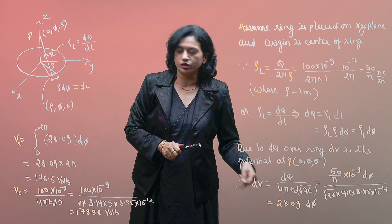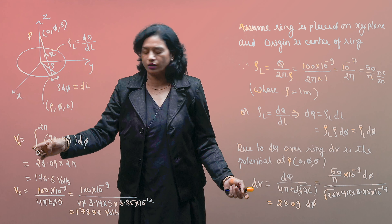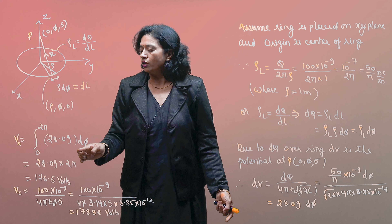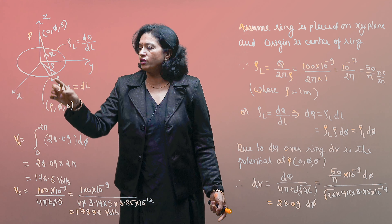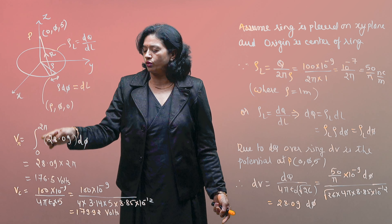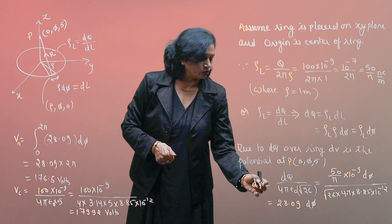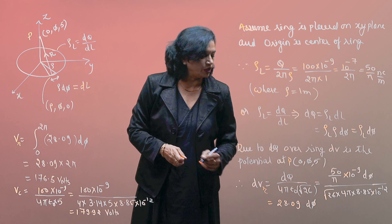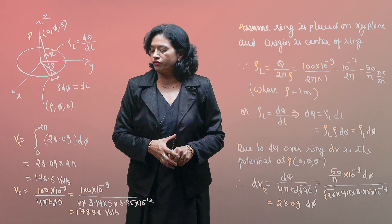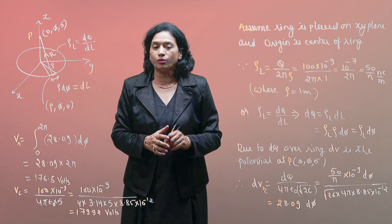To find the total potential V due to the entire ring, I integrate dV around the ring. The limits of integration for φ are 0 to 2π, since φ varies over the full ring. Solving this integration of 28.09 dφ from 0 to 2π gives a total potential of V_ring = 176.5 volts.